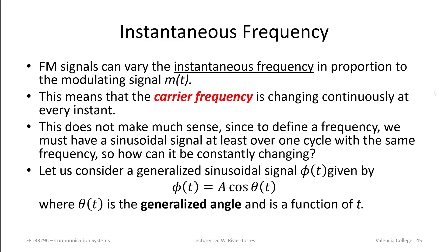What that means is that the carrier frequency is changing continuously at every instant of time. Normally when we measure frequency, we look at one period of the signal — one over that period gives you your frequency. But an FM signal is constantly changing its frequency, so how can that make sense? Because even within one period of the signal, the frequency is changing, so you don't really have a concept of a period anymore.